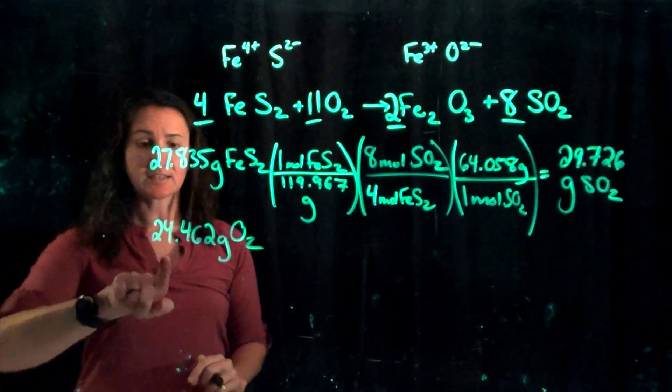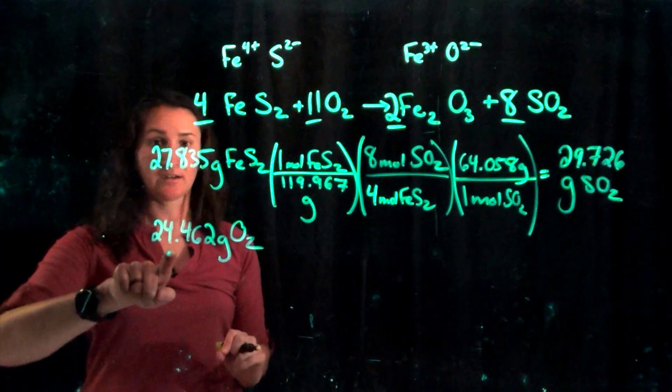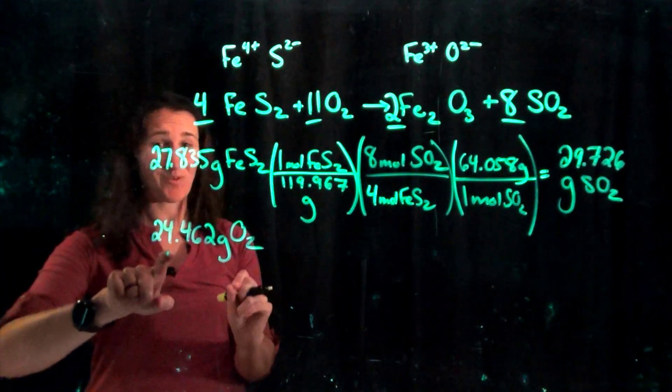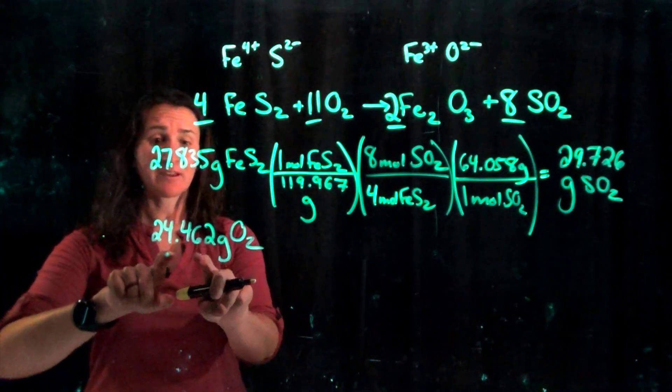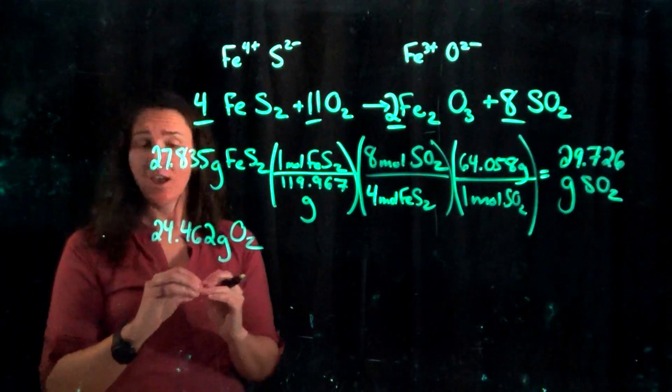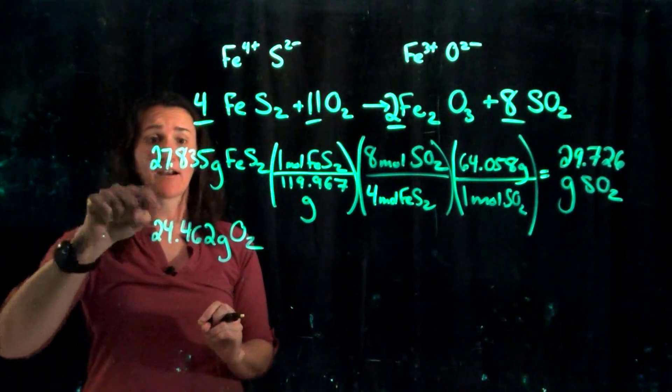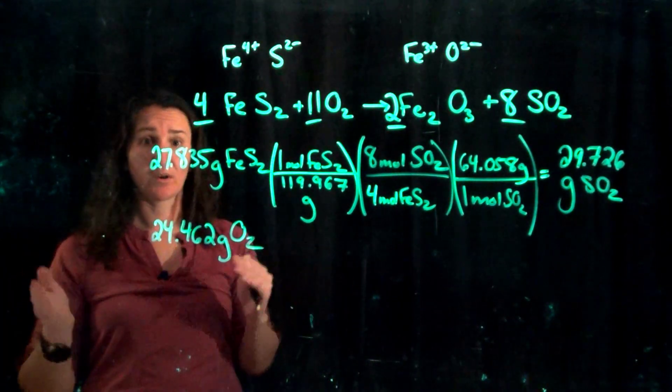You cannot just look at these two and decide that oxygen is a limiting reagent because it's smaller. I hope you remember, if nothing else I hope you remember that from gen chem, you have to be able to convert it to moles. You can compare moles, you cannot ever compare grams and say you have more or less.